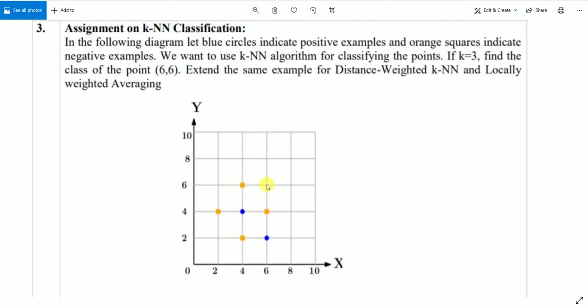And as far as majority is concerned, the majority among these three points is the orange squares. That means the negative class. So we can conclude that the point (6,6) belongs to negative class.